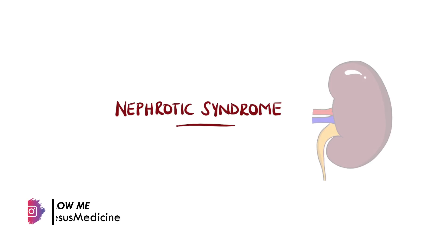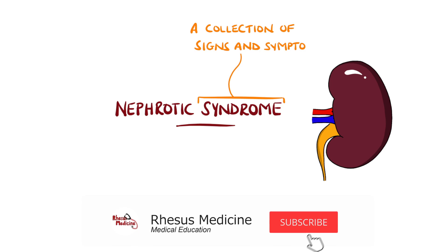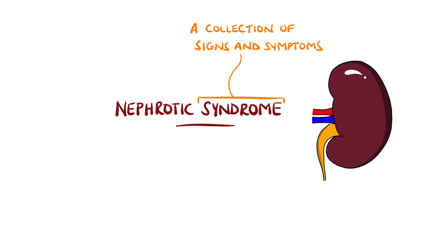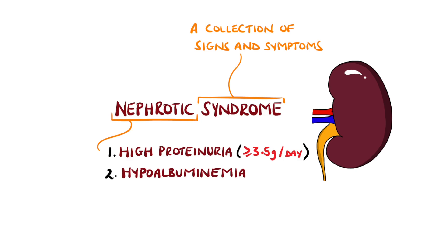Nephrotic syndrome is a collection of signs and symptoms that result from damage to the kidneys, and is often confused with nephritic syndrome. In nephrotic syndrome, there is a substantial amount of protein being lost through the kidneys in the urine, defined as more than 3.5 grams per day. This leads to hypoalbuminemia — a low level of albumin in the blood — as albumin is the most abundant protein normally in the blood. These two are defining features of nephrotic syndrome.